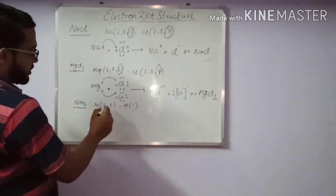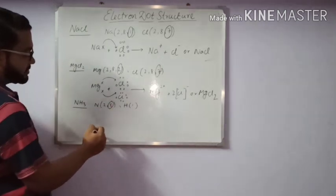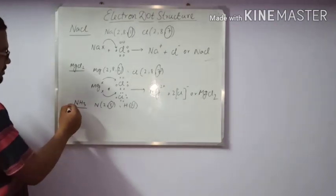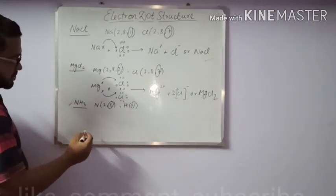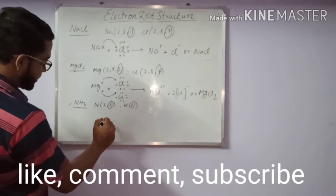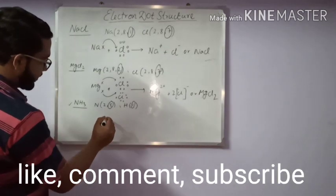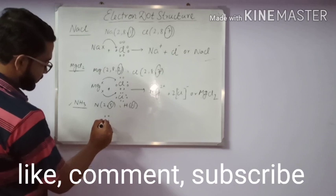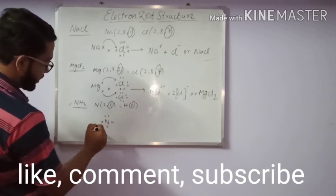Ammonia. Now here valence electron is 5 and here is 1, and we know the formula is NH3. So nitrogen has 5: 1, 2, 3, 4, 5.